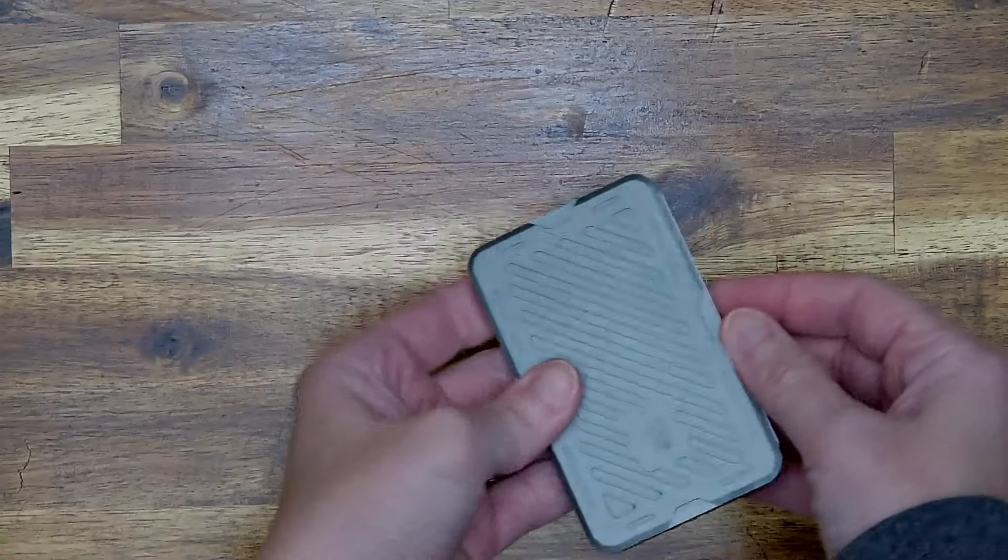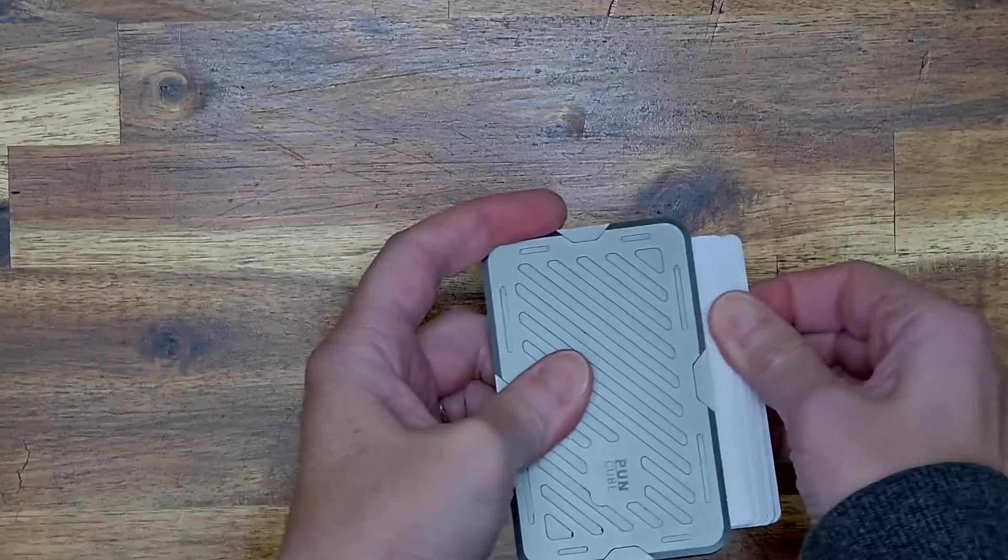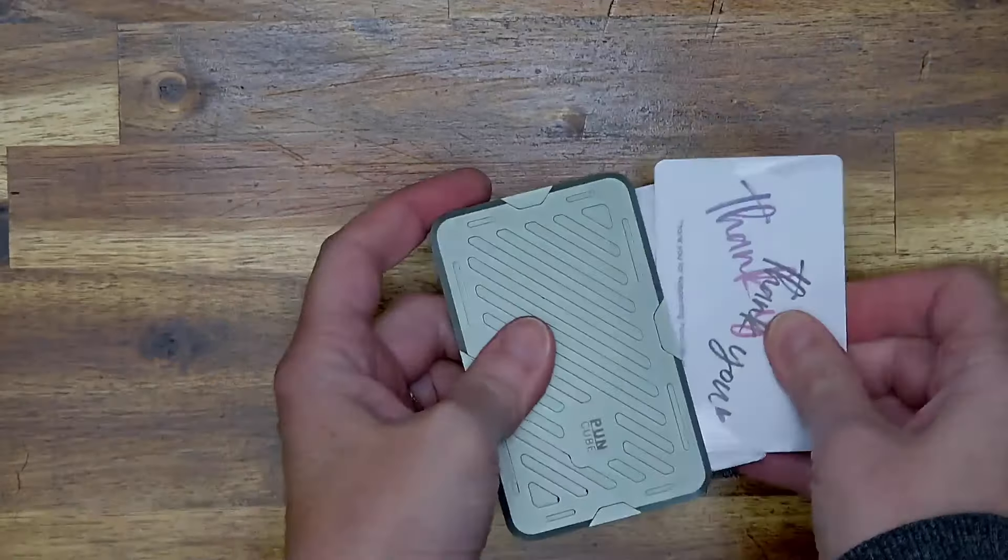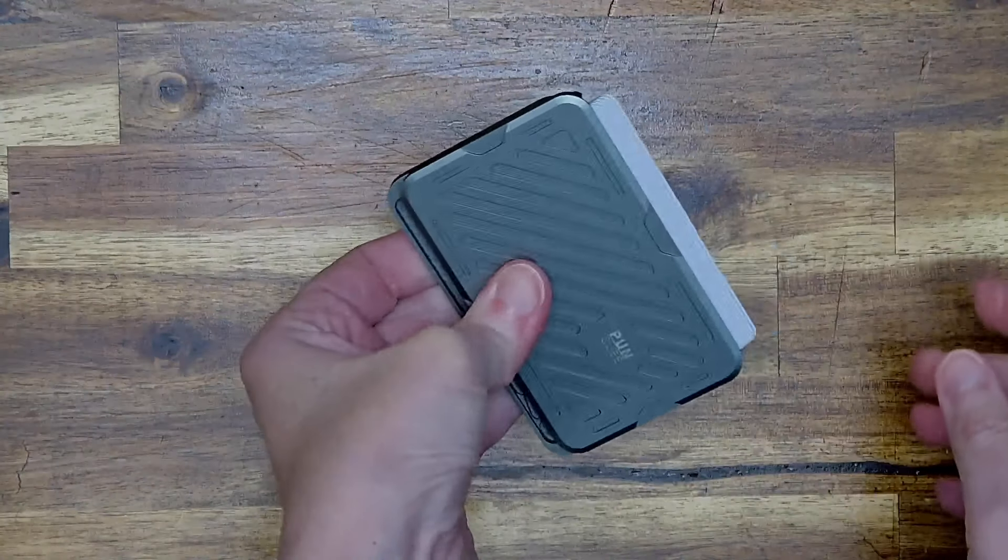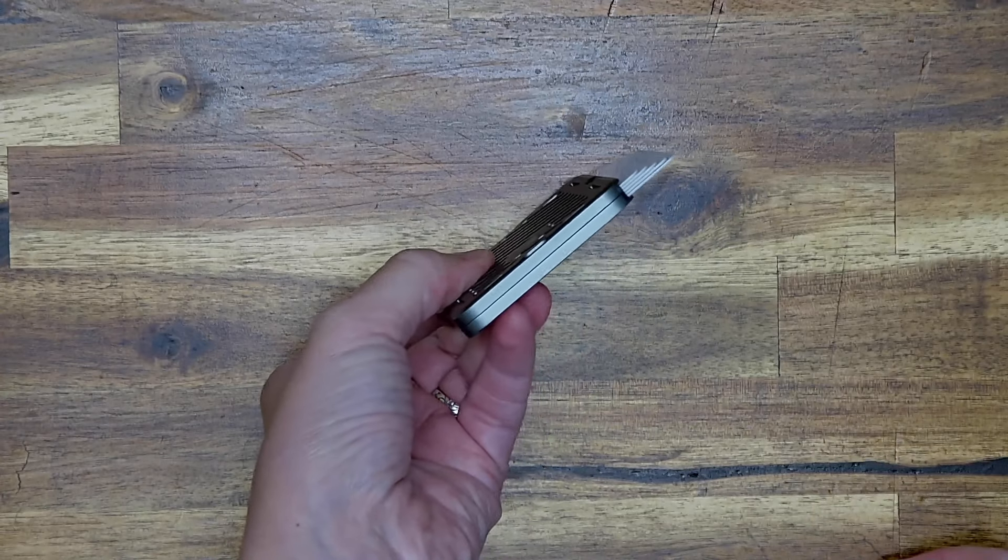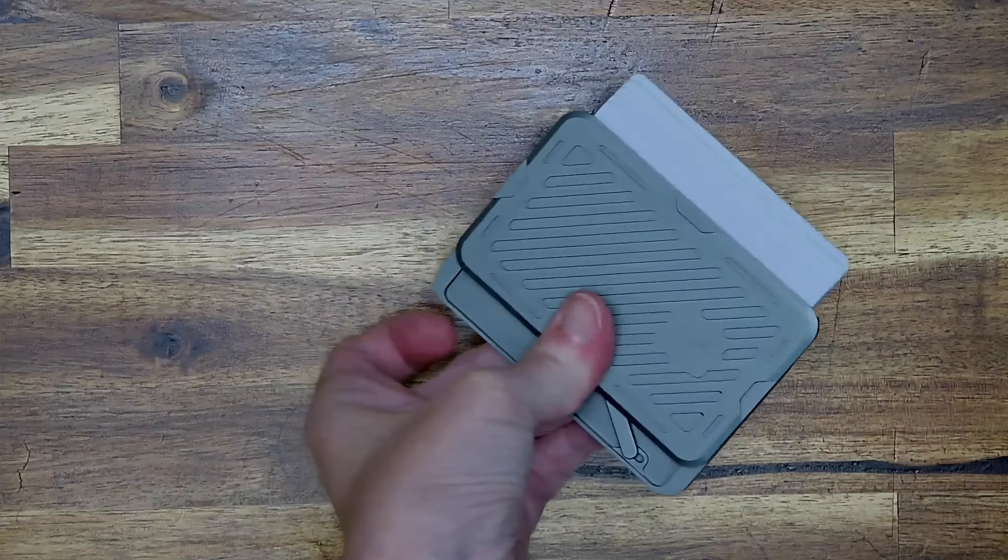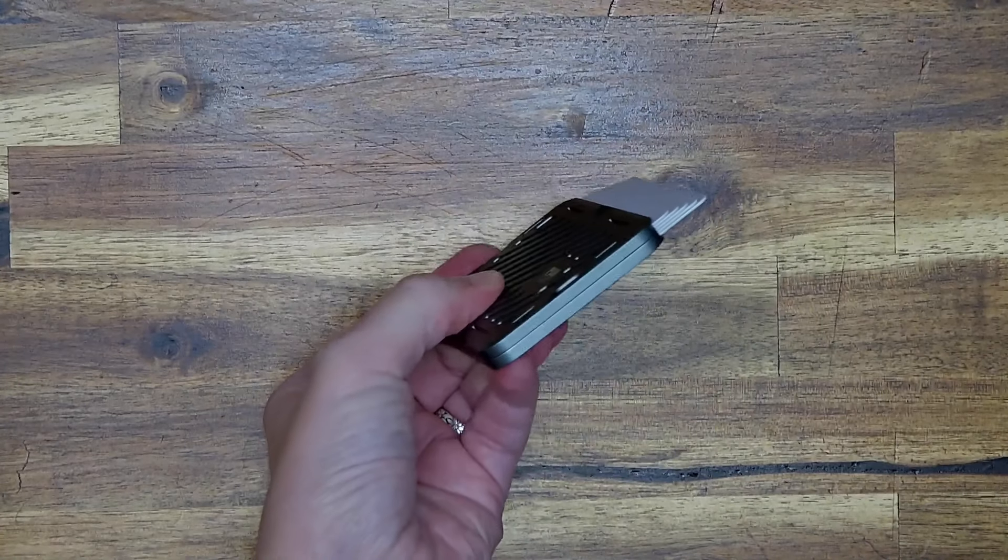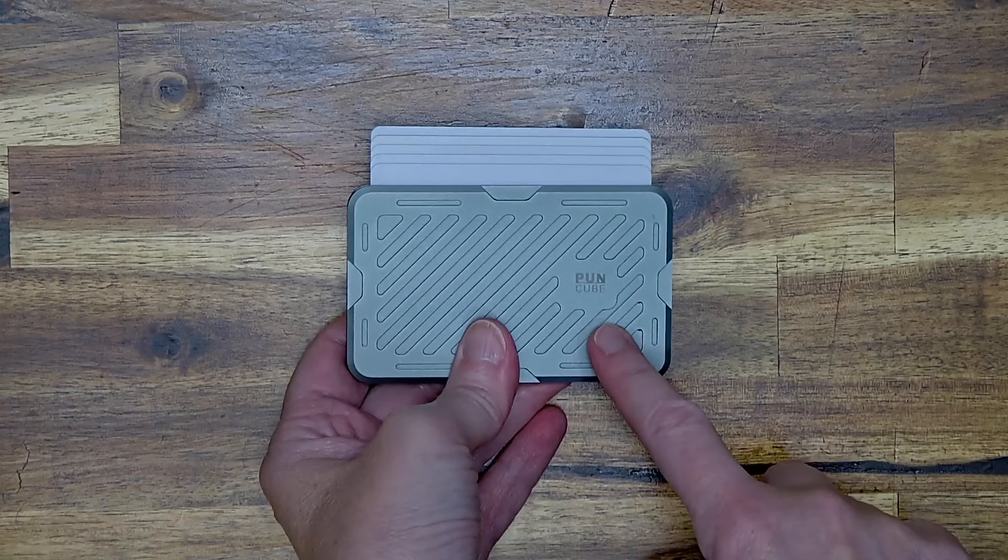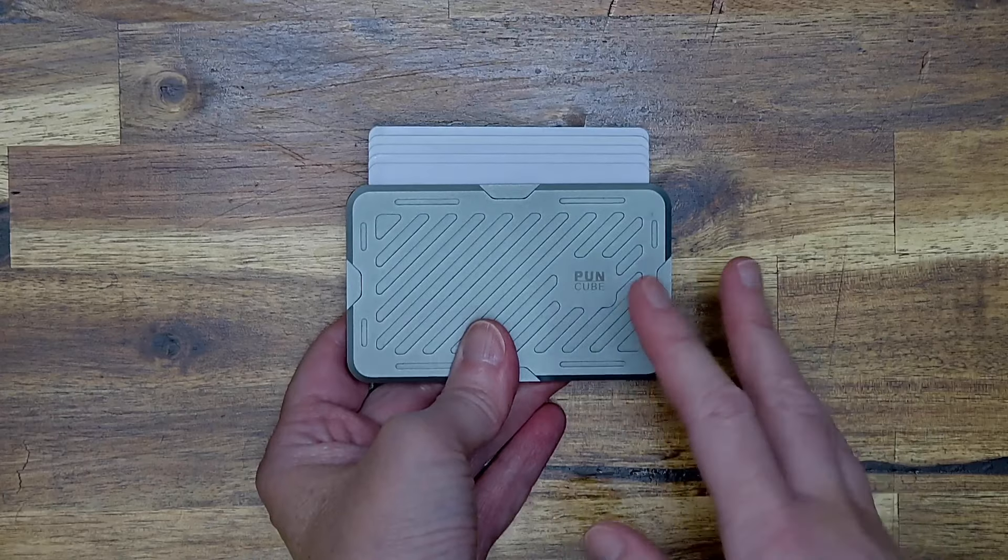It might be harder to grab the top one though. That time was a little easier and I could just pull them out and pull off that top card. There we go. It feels like if you put the max number of cards that it's a little harder to get that slide to work. But I was told by Pun Cube that this is a pre-production sample. So they're still working some of the little kinks out of this wallet.